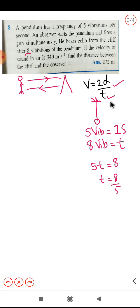I hope you have understood the process here, how to find out the time. Five vibrations are one second, so eight vibrations take how much time? This is direct variation method. If you cross multiply, you will get the value of time. So this time we will put in this formula, because after eight vibrations he hears the echo. It's eight vibrations, so we need to calculate the time for that.